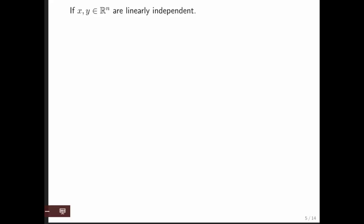If x and y are linearly independent, which is a term you now know, then we know that the span of those two vectors forms a two-dimensional subspace. You can think of this as a plane going through zero.